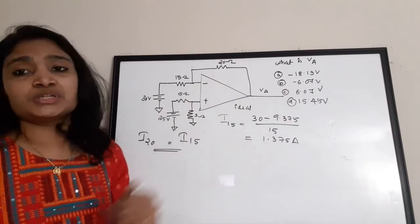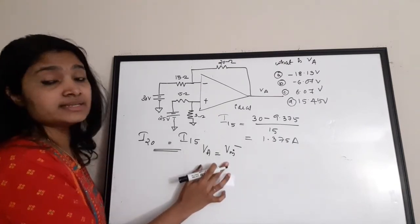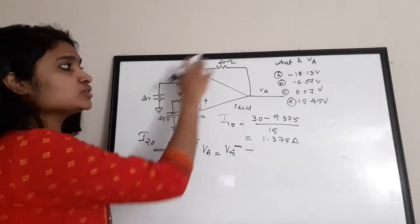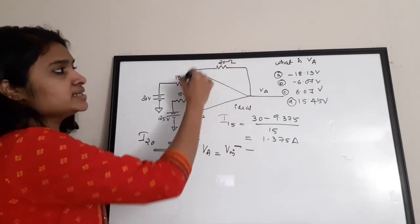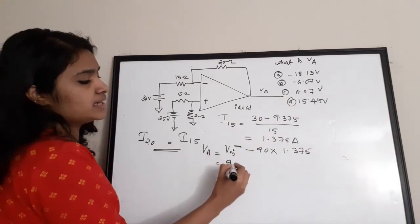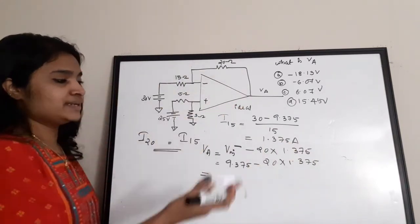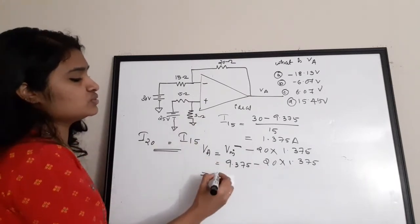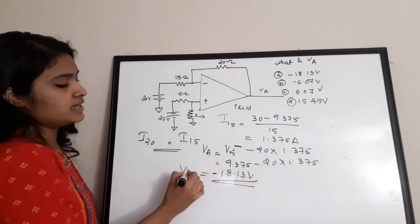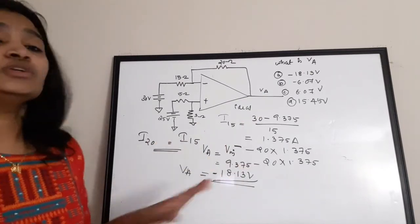Applying Kirchhoff's Voltage Law around the output loop: Va = V_in− − I20 × 20Ω = 9.375 − 1.375 × 20 = 9.375 − 27.5 = −18.13V. The output voltage Va = −18.13 volts.